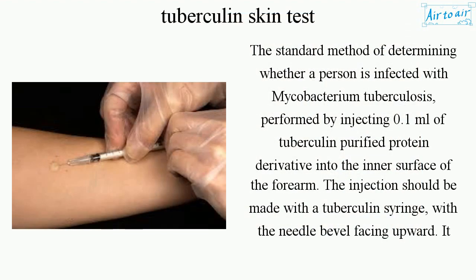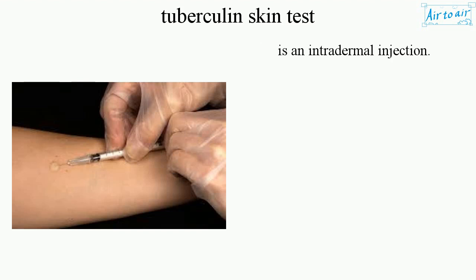The standard method of determining whether a person is infected with Mycobacterium tuberculosis is performed by injecting 0.1 milliliters of tuberculin purified protein derivative into the inner surface of the forearm. The injection should be made with a tuberculin syringe with the needle bevel facing upward. It is an intradermal injection.